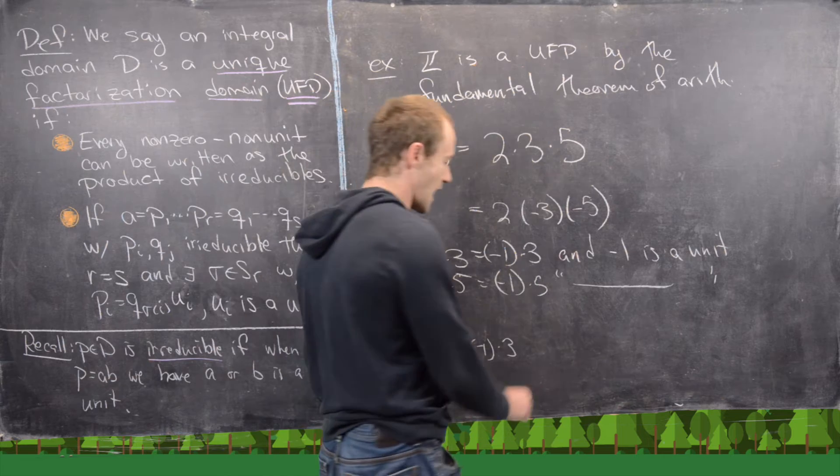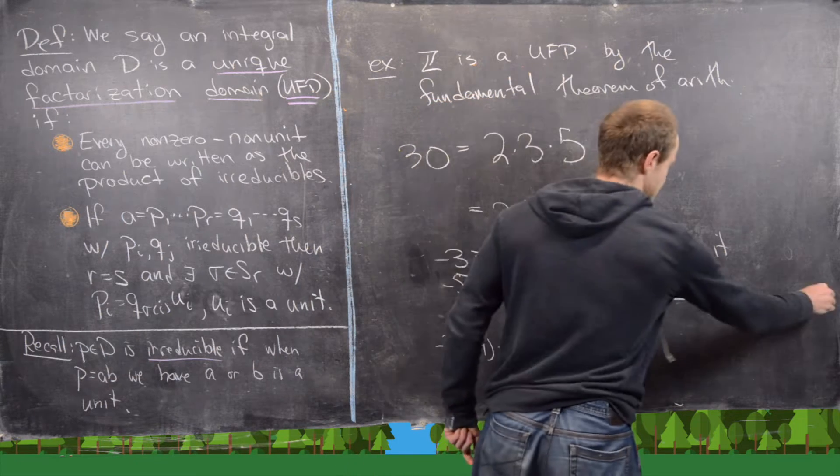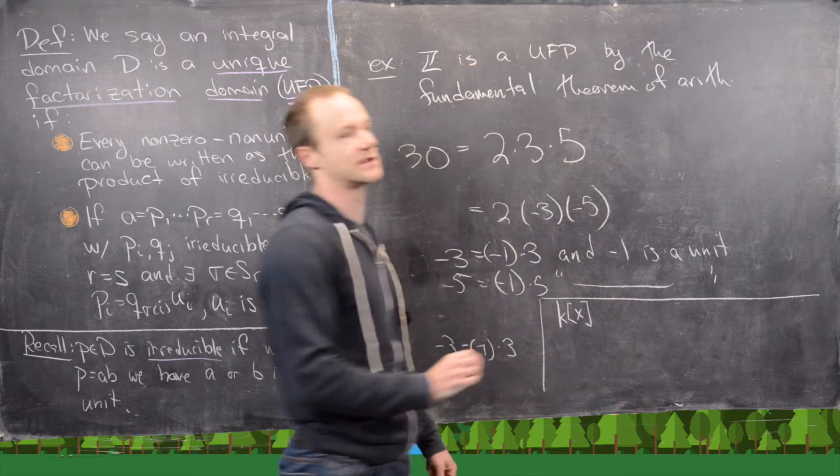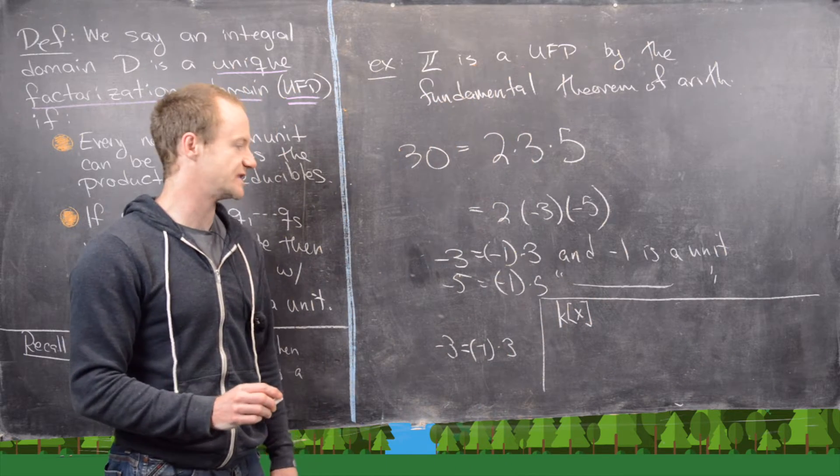Okay, so that's an example. I'll present two more examples without proof. So K adjoin X, where K is a field. In other words, the polynomial ring with entries in a field, that's a UFD.